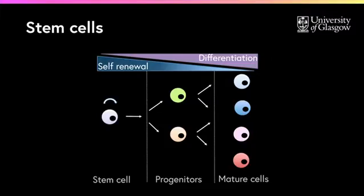Adult stem cells sit at the top of the cell hierarchy. They are responsible for the production of every cell type within a particular niche through proliferation and differentiation. Stem cells are long-lived,